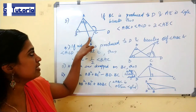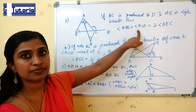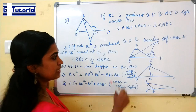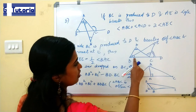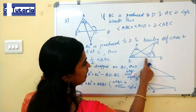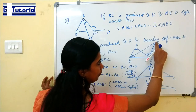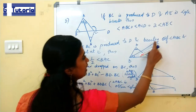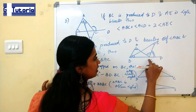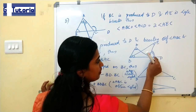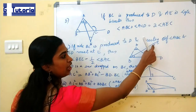Another theorem: if BC is produced to D and AE is the angle bisector of the exterior angle at A, then angle ABC plus angle ACD equals 2 times angle AEC. So twice the angle AEC gives the sum of angles ABC and ACD.